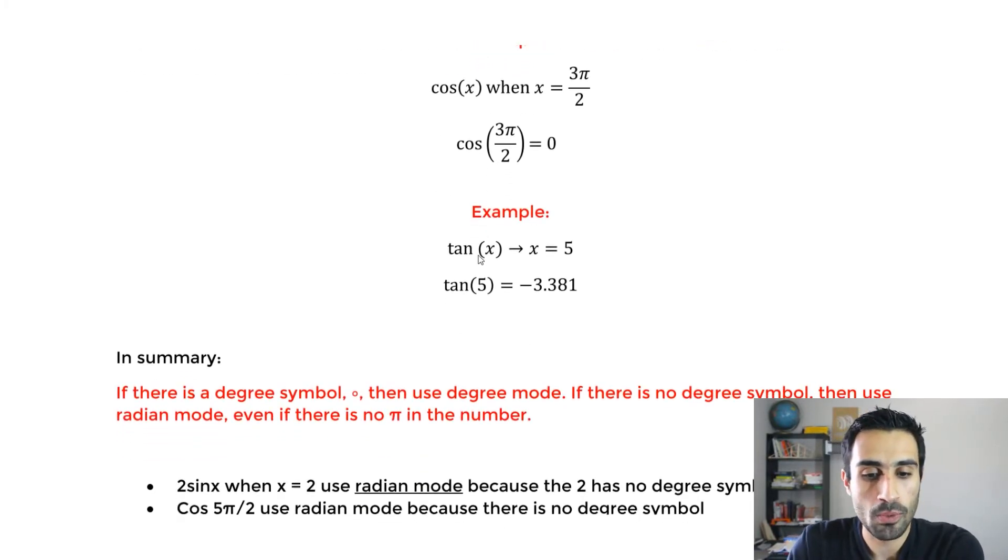Now let's look at this example. It says tan of x when x equals 5. So what mode would this be? It has to be in radian mode, not degree. Notice it says x equals 5 and it doesn't have the degree symbol. So you want to keep it in radian mode. We take x and put it in here, tan of 5. You should get negative 3.381 in radian mode. If you do it in degree mode, you'll get a different answer and that would be incorrect.